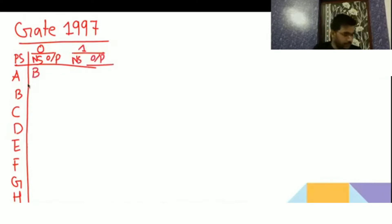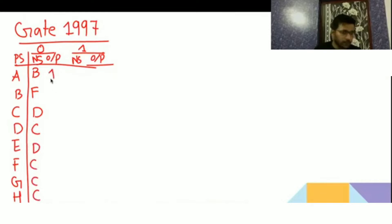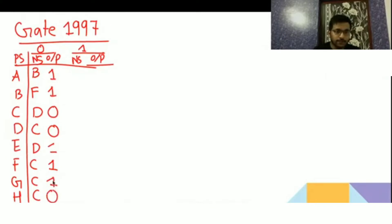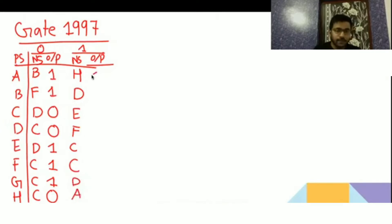The state transitions are filled in: for state A on 0, next state is B with output; on 1, next state is F. For state D, next state is C on 0. States C and D are in the next state column. For state H, next state is D on 0 and F on 1. Output is always 1 for certain states. This is our complete question.